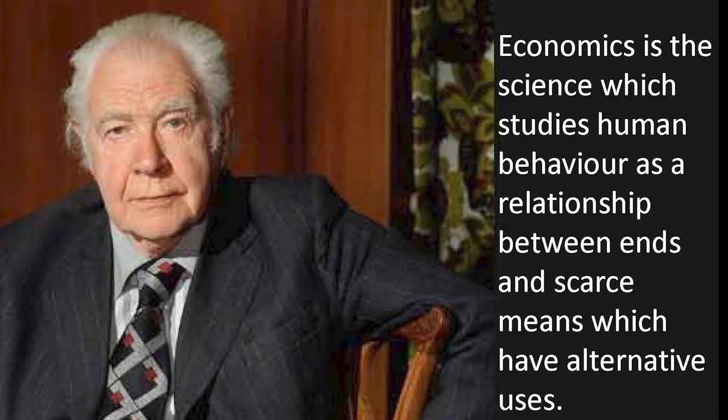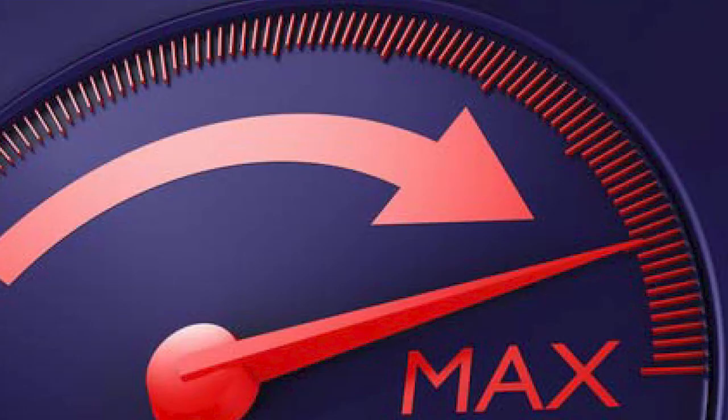You'll see here a picture of Lionel Robbins. There are competing ideas about what the study of economics is about. One school of thought suggests that economics is the science which studies human behavior as a relationship between ends and scarce means which have alternative uses — a helpful description of the way that economists think about maximization and optimization. That was the idea Lionel Robbins had.